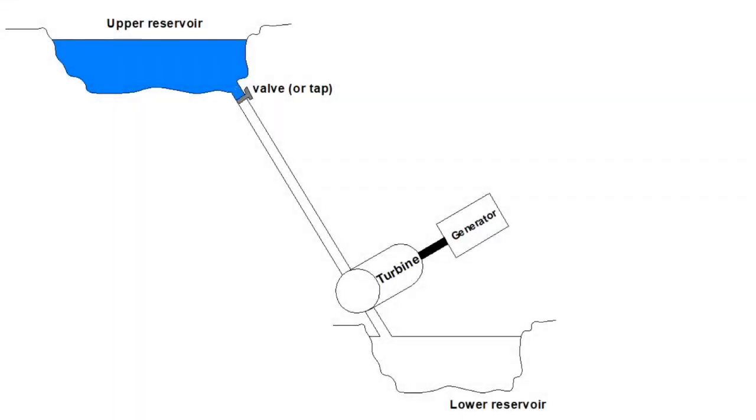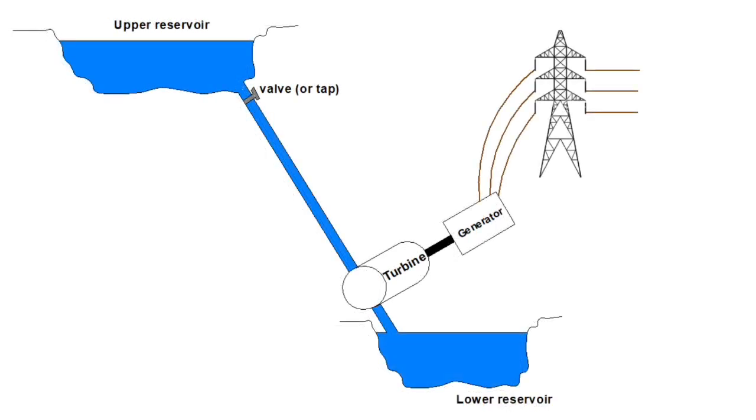Right, move on to hydroelectric power now, which as the name might suggest means using water to generate electricity. Water is stored in an upper reservoir until it's needed. When it is needed, the valve or tap is opened and it can flow hundreds of feet down the pipe through the turbine, and then it's stored again in the lower reservoir.